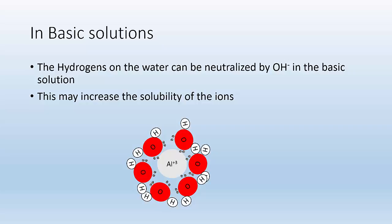Alright. So in basic solutions, the hydrogens on the water can be neutralized by the OH- in the basic solution. Alright. This may increase the solubility of the ions. So what happens? Oh, look at that. So fast. So basic solutions, some of these Hs are going to get neutralized and disappear, and this whole ion may be more soluble than it used to be.